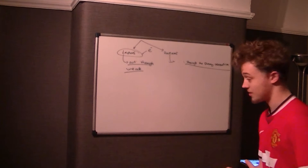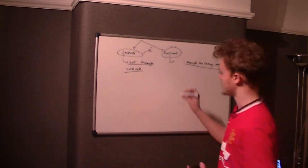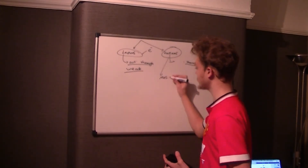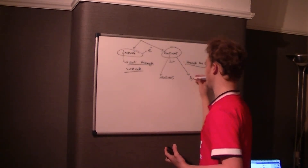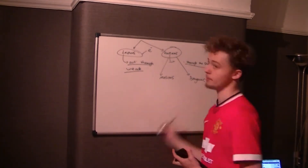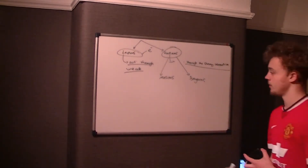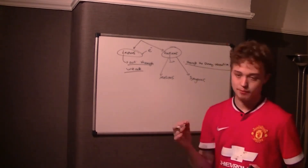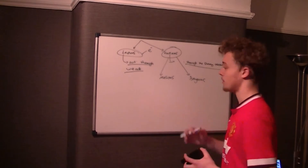This leads us on to hadrons. Hadrons are split up into two types: mesons and baryons. All hadrons are made up of quarks because they're not the smallest thing you can get. For example, a proton contains three quarks: up, up, and down.